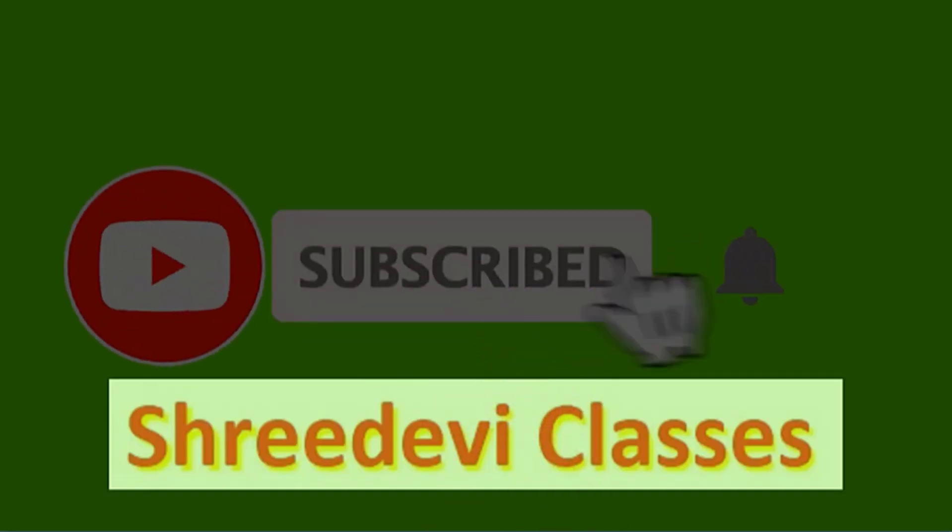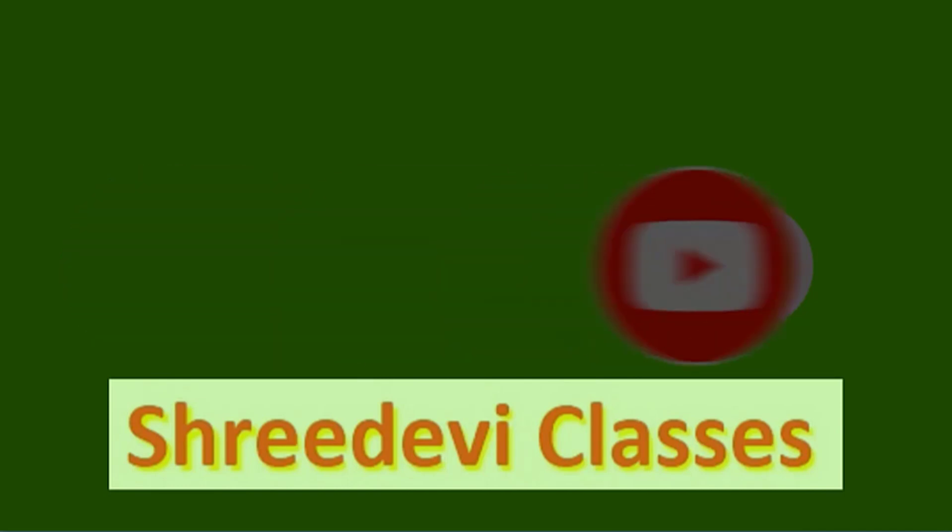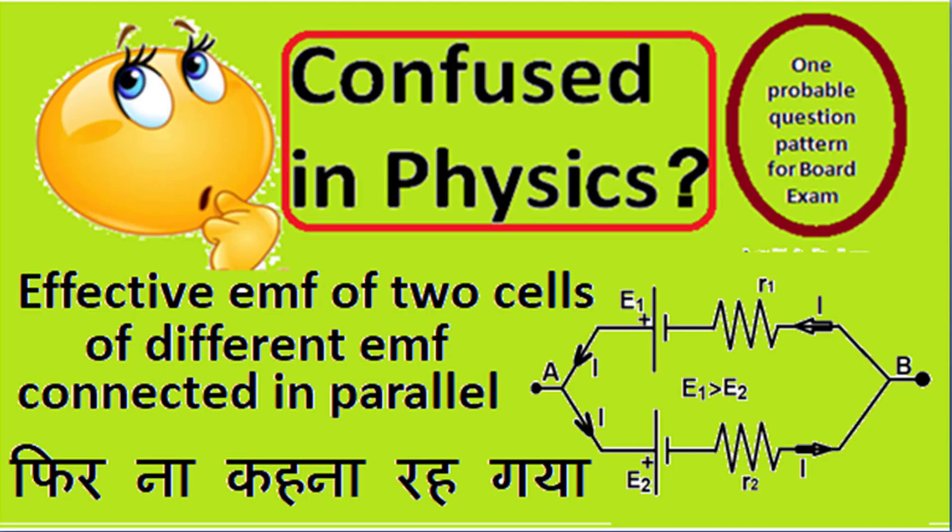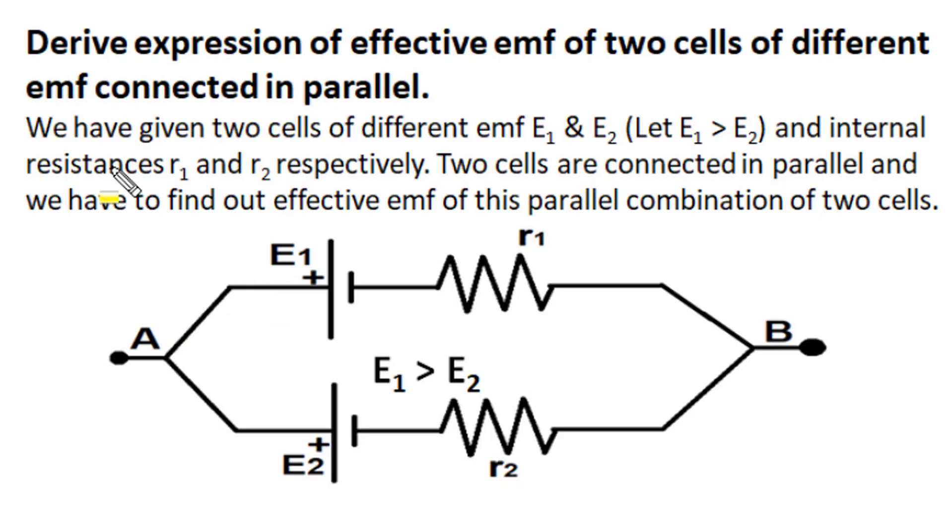The topic is effective EMF of two cells of different EMF connected in parallel. If you devote the next five minutes to this video and find such a pattern in your examination, don't say you left it behind. Our board examination question is: derive the expression of effective EMF when two cells of different EMF are connected in parallel.